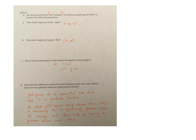Describe the difference in how the two functions grow over time, which function has a greater value as X approaches infinity. So again, this is in Dr. Spears math teacher language. You need to do your best to be able to write it where you understand it. So G of X grows at an exponential rate because it has the variable in the exponent. While F of X is a quadratic function. This forms that parabola. So while G of X begins much slower than F of X, it eventually has a significantly greater rate of change and thus ends up having a greater value over time.